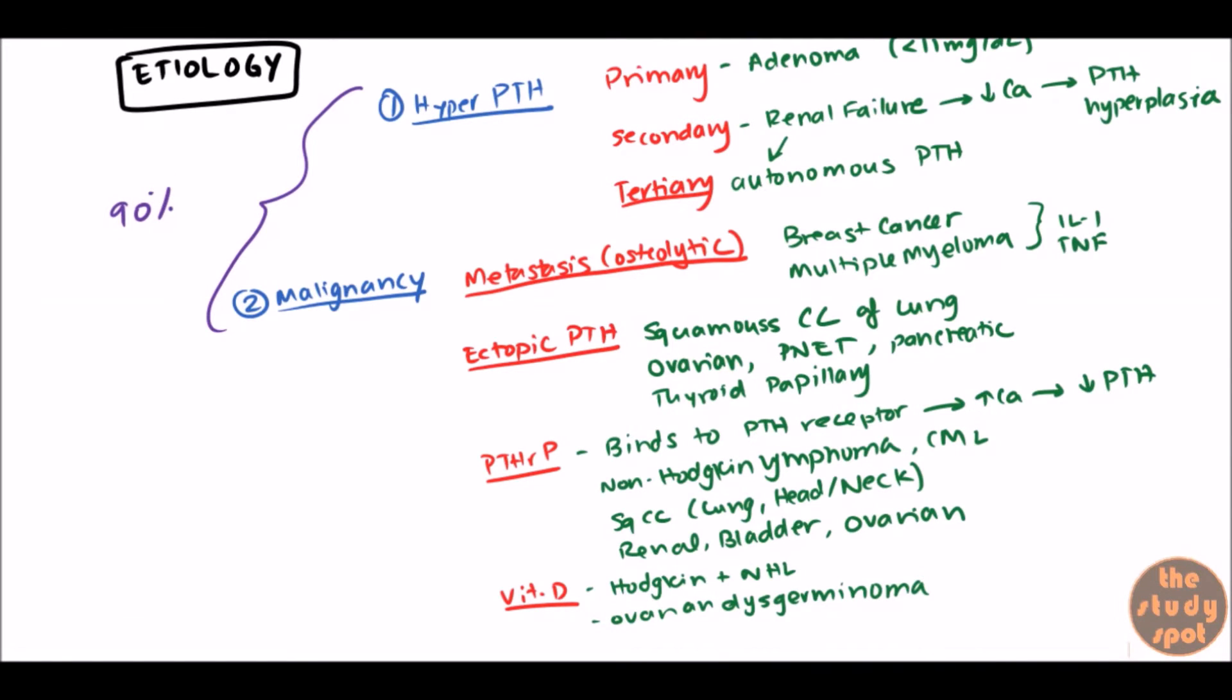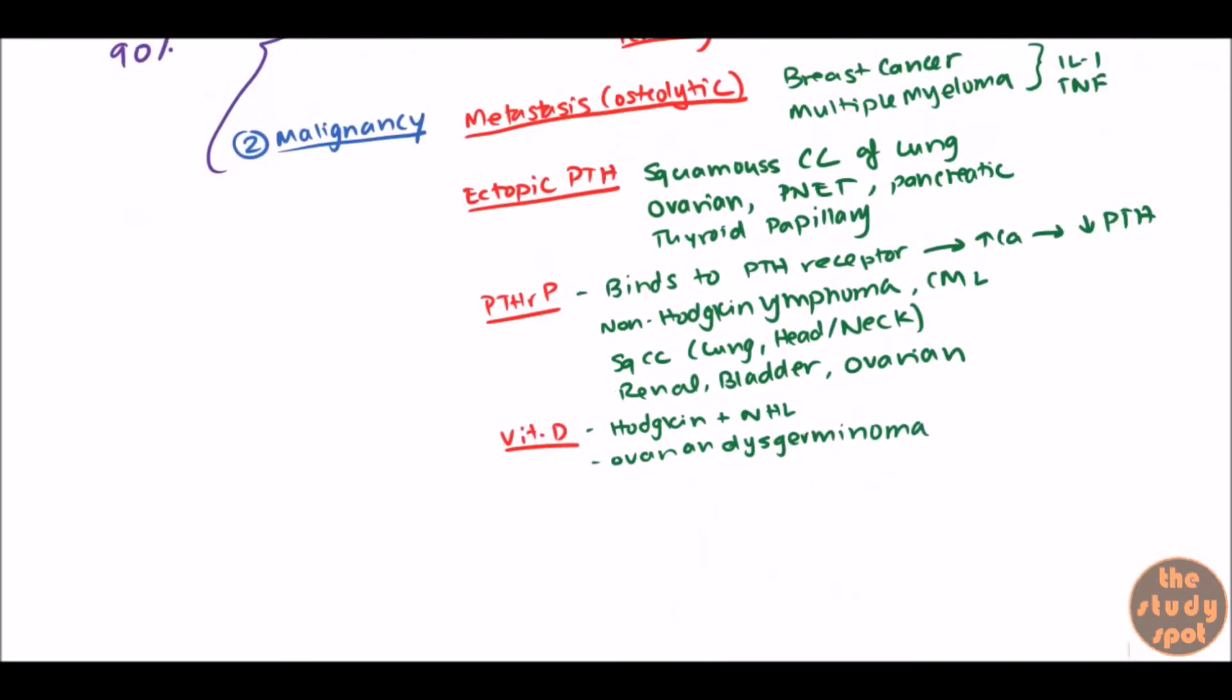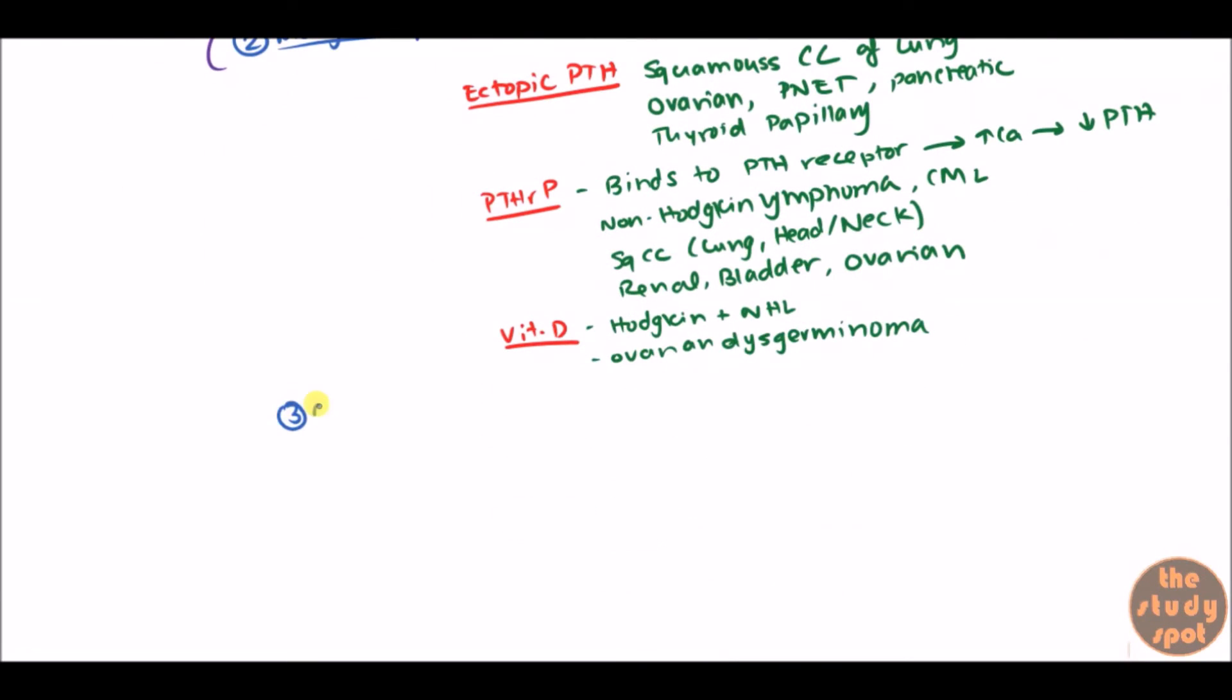So when you see a patient with hypercalcemia this is generally what you want to first focus on. Of course, there are other causes. Granulomatous diseases is another cause. And these are going to be diseases such as sarcoidosis, TB, borreliosis. And the way they work is the macrophages begin to activate vitamin D. And so here you have high vitamin D levels.